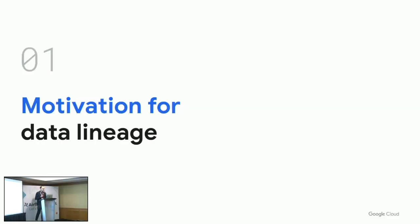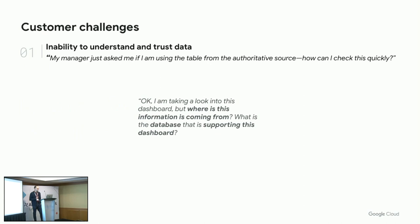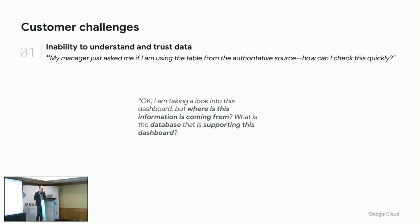So why do we even care? Lineage is important for many reasons and there are many challenges it answers that we see day to day with our customers. We are not always sure about the data that we have — we don't always easily understand how the data appeared or how it was created using which assets. Imagine you're a data engineer and someone asks you: how did you get that report? Which data did you use to produce it? Where is this information coming from?